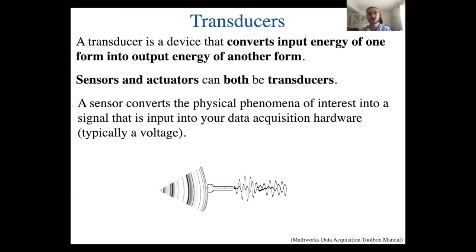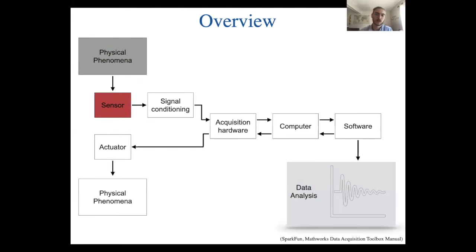For example, when we think a sensor measures force, it actually senses the change in shape or the strain of the gauge. A thermometer is not directly measuring temperature — it's actually measuring the change of volume in mercury. So it's very important that those sensors are well calibrated, because we need to know exactly how much of a change in volume corresponds to how much of a change in temperature. In lab one, for example, the sensor will be the accelerometer.